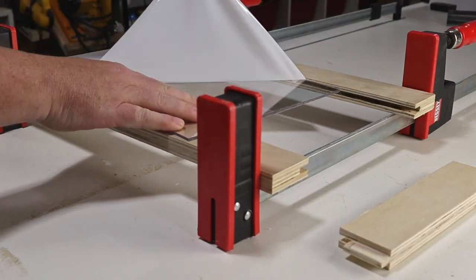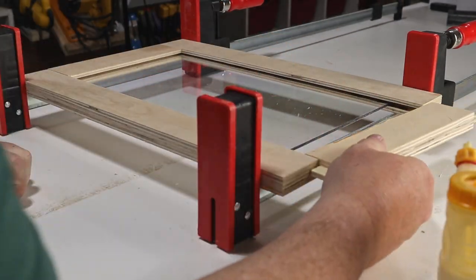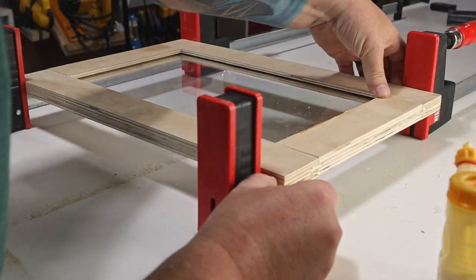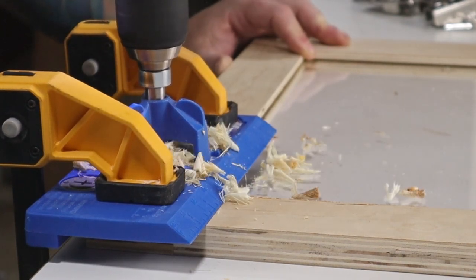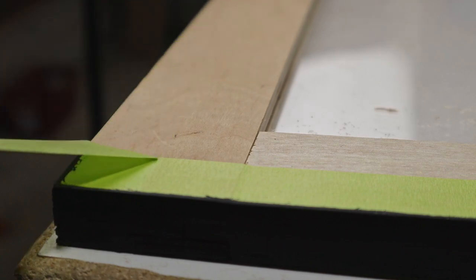Now it's finally time to assemble the doors, and the new Bessey clamps are great for this task. Once those dried, I added some holes for the hinges, and then painted all the edges.